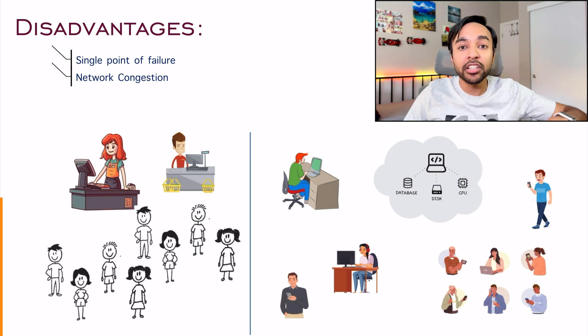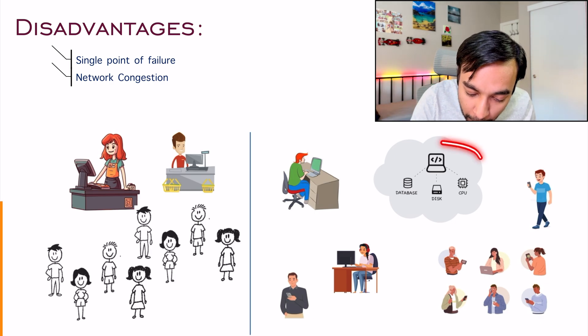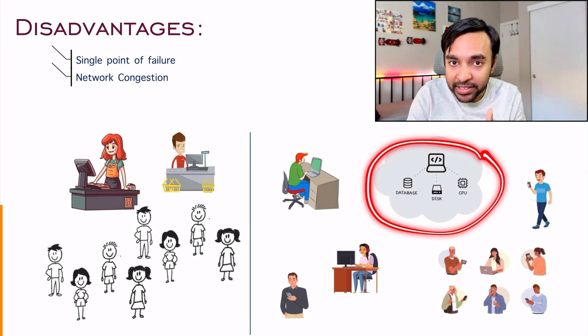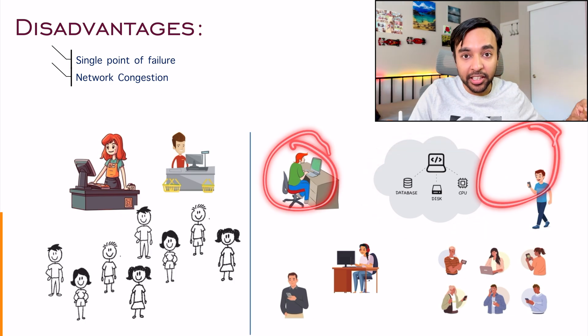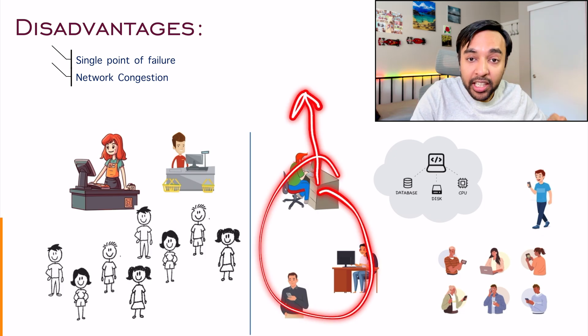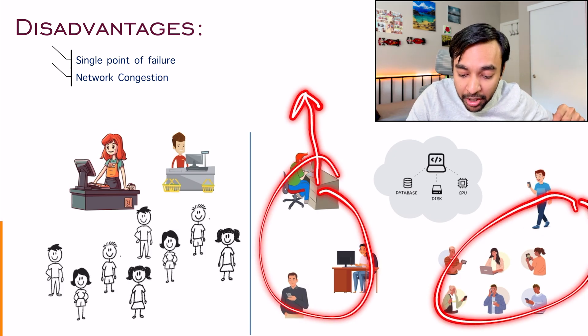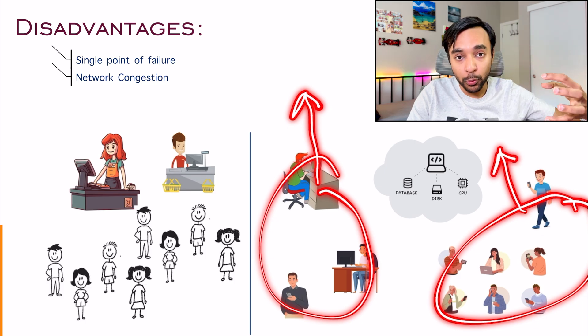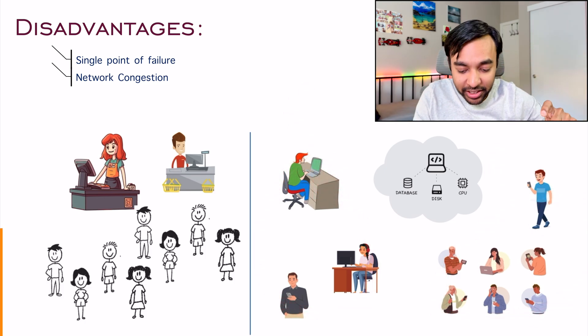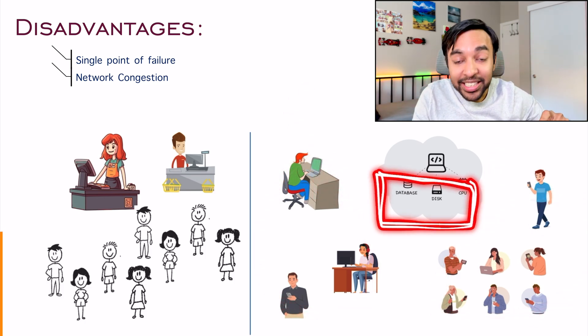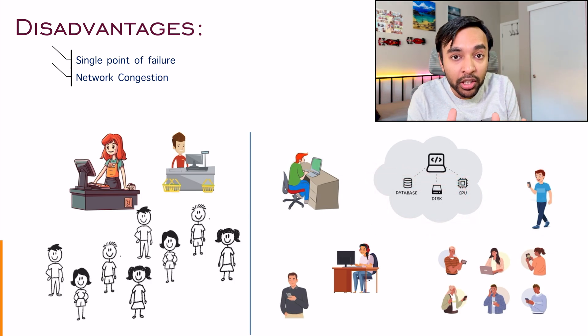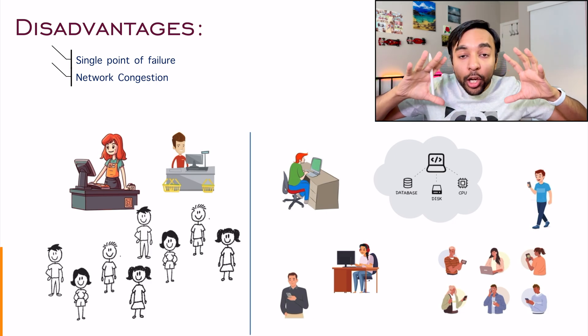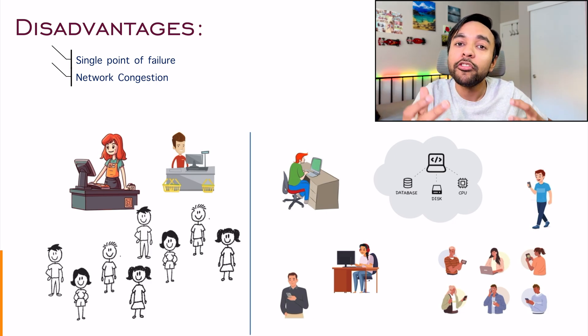In case of a computer application, what do you do instead of deploying your application only at one place in the world, you can deploy your computer application at two places in the world. So some bunch of people will be connected to server one and the other bunch of people will be connected to server two. And both these servers can be managed by a central database system. So these are just some of the methods that I am talking about to mitigate all of these challenges. Certainly there is a lot more involved, but I want to give you a brief idea.